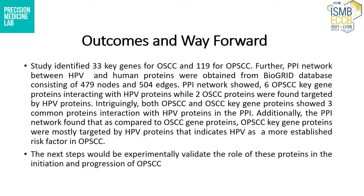The outcomes we achieved are: we identified 33 key genes for OSCC and 119 for OPSCC. We built a protein-protein interaction network between HPV and human proteins using the BioGrade database. The network included 479 nodes and 504 edges. The network showed six OPSCC key gene proteins interacting with HPV proteins, while two OSCC proteins were found targeted by HPV proteins, and three common protein interactions were found between HPV proteins, OPSCC, and OSCC. Additionally, the network found that compared to OSCC, HPV is a more significant and established factor in OPSCC.